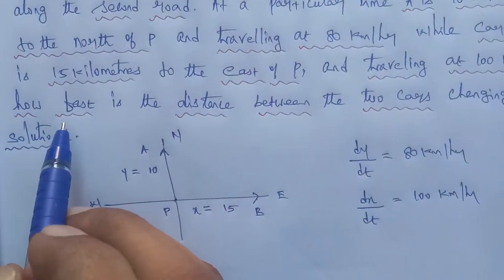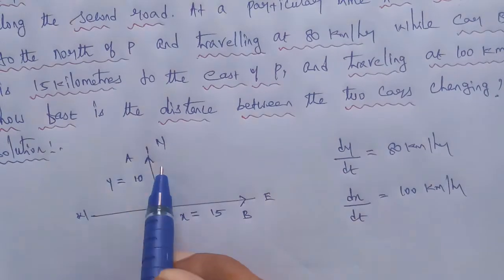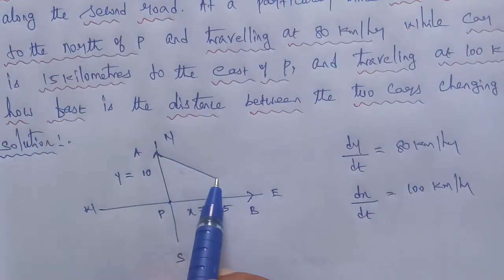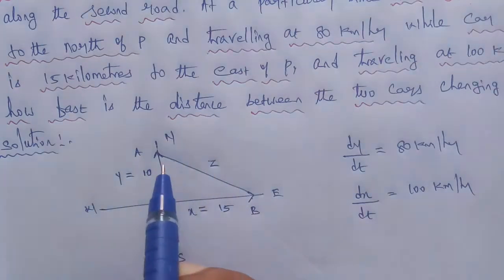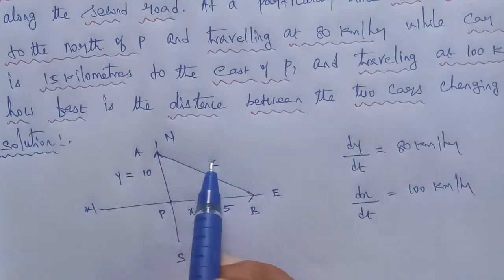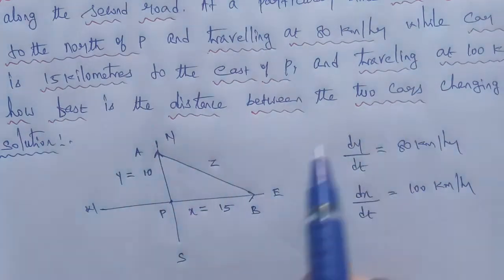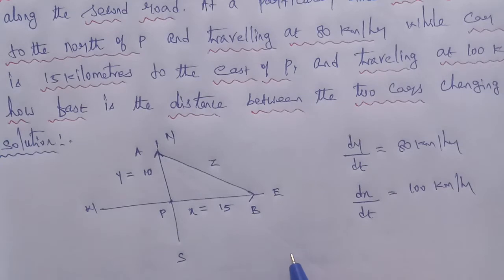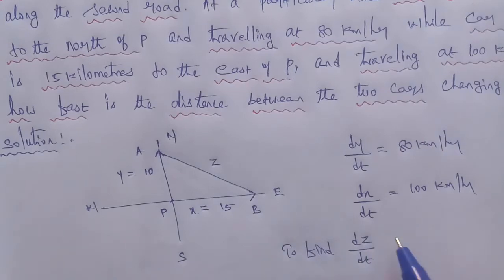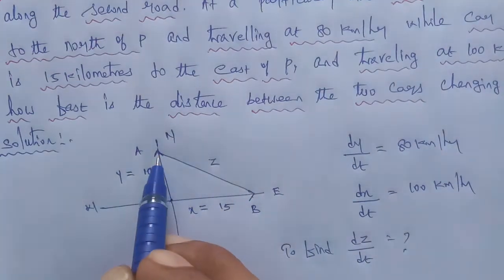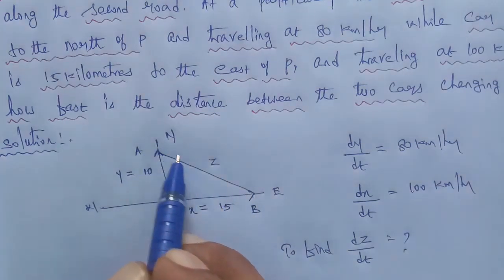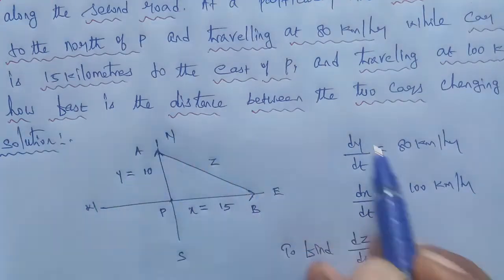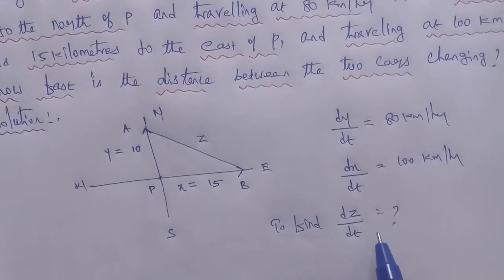The distance between the two cars changing. The A car and B car distance, this is z. The rate of change, dz by dt is equal to question mark.